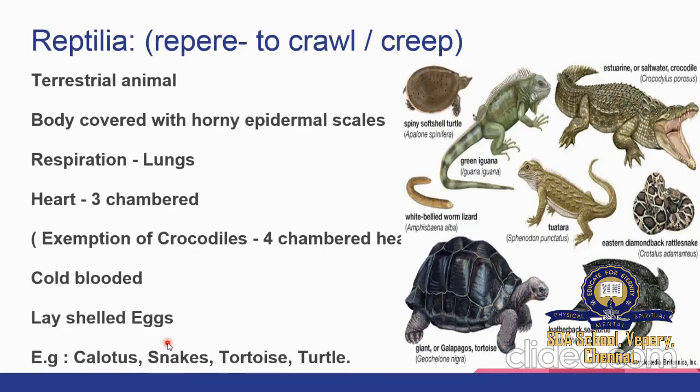Next class is Reptilia. 'Reptile' means to crawl or creep. These are creeping or crawling creatures fully adapted to life on land. The body is covered with horny epidermal scales. Respiration is through lungs. The heart is three-chambered, with an exception for crocodiles which have a four-chambered heart. Most reptiles lay eggs with a tough outer shell. Examples: tortoise, lizard, snake, and turtle.